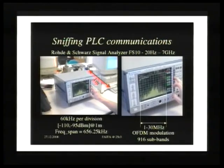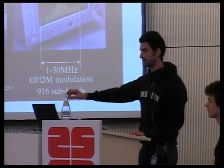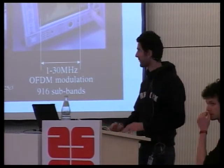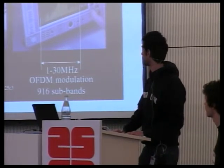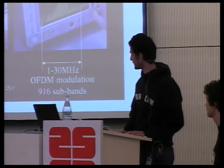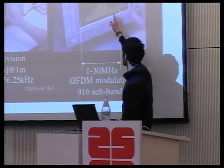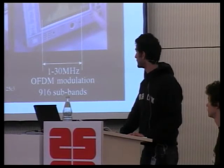We've been trying to sniff PLC communications. As you can imagine, the cable behaves like an antenna — electrical cables run straight through each room of a building, producing radio emissions outside. If you test at one meter with a signal analyzer at 60 kHz per division, you'll find OFDM modulation in the 1 to 30 MHz band. You can see the adaptive modulation changing all the time as electrical devices alter channel quality.